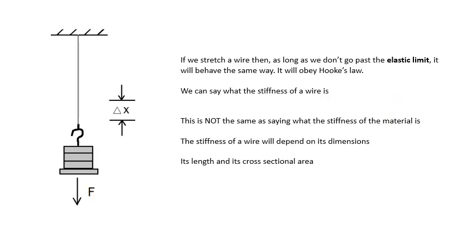Now, if we stretch a wire, then as long as we don't go past the elastic limit, it will behave the same way. It will obey Hooke's law. And we can say what the stiffness of the wire is. Now, this is important. This is not the same as saying what the stiffness of a material is. You can't say what the stiffness of a material is in newtons per meter. Why?